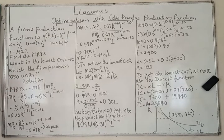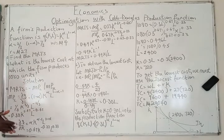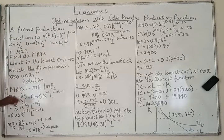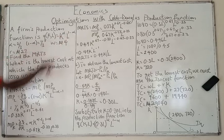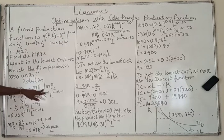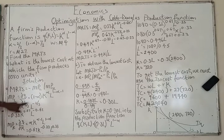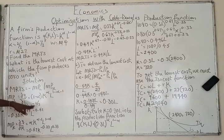If A is not shown in the production function, it simply means A is assumed to be 1. Taking the partial derivative of Q with respect to L gives us: (1 minus alpha) times K^alpha times L^(1 minus alpha minus 1). Given that 1 minus alpha equals 1/3 and alpha equals 2/3, this simplifies to 0.33 times K^0.67 times L^(minus 0.67).